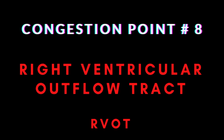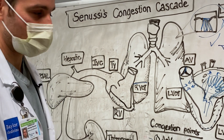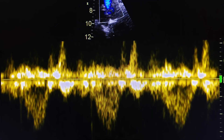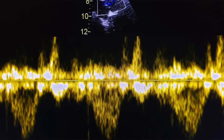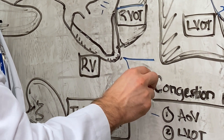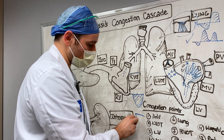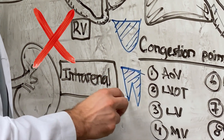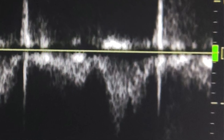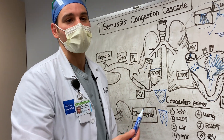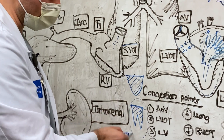Moving back to the right ventricular outflow tract: using pulse wave Doppler, a parabolic waveform is good — it means no high resistance or elevated pulmonary vascular resistance. Those waveforms provide incredible information about pulmonary artery hemodynamics. When you see an accelerated waveform with notching, that is bad. This can be seen in pulmonary hypertension or any cause of high PA pressures, such as PE. All of this can be gleaned through RVOT Doppler.